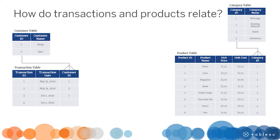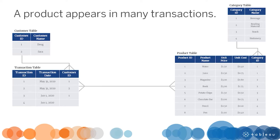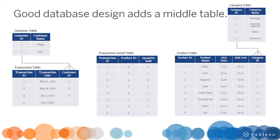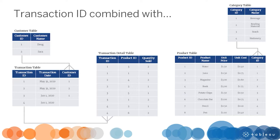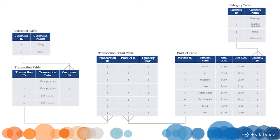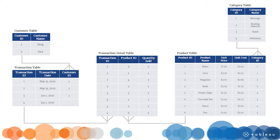How do transactions and products relate? A transaction can have many products, and a product can appear in many transactions — this is a many-to-many relationship. Since there is no common field between the two tables, good database design resolves this by adding a transaction detail table in the middle. Transaction ID combined with product ID uniquely identifies each row. The quantity sold is also recorded. The many-to-many relationship has been replaced by two one-to-many relationships. Now that we understand our data model diagram, let's build this out in Tableau Desktop.